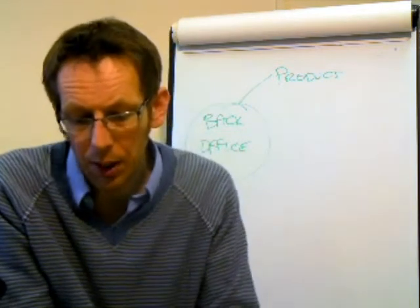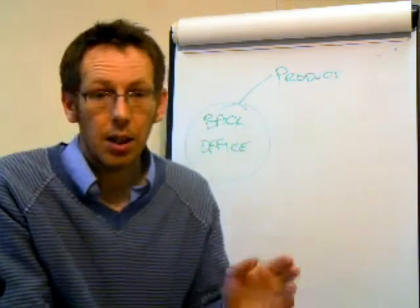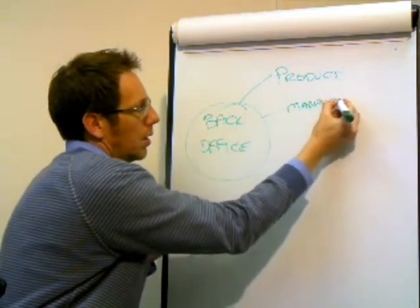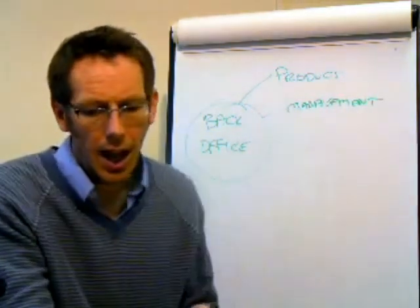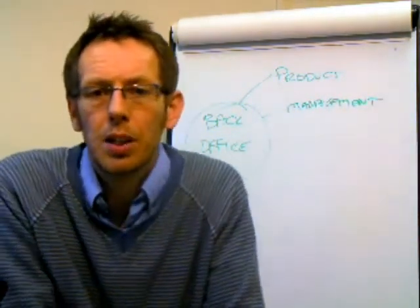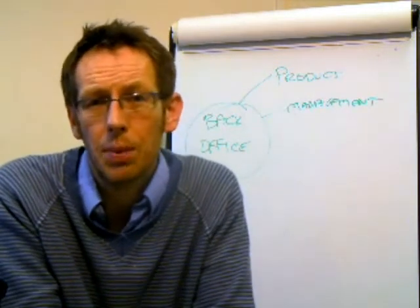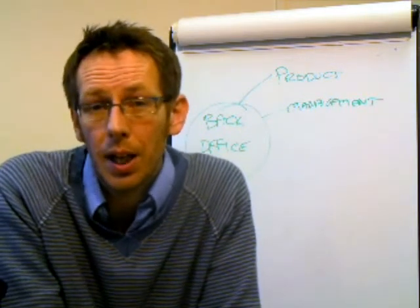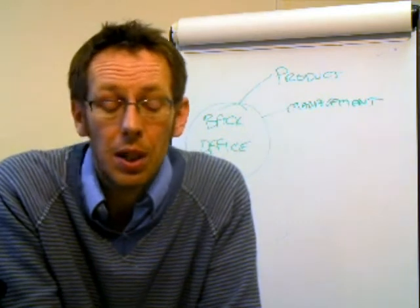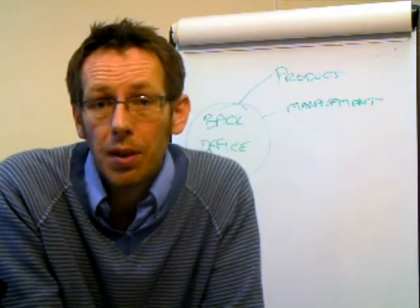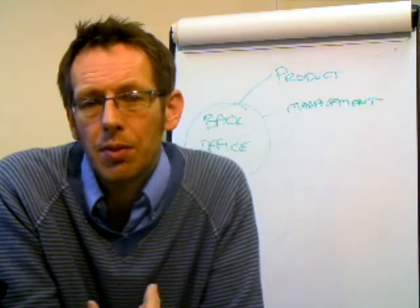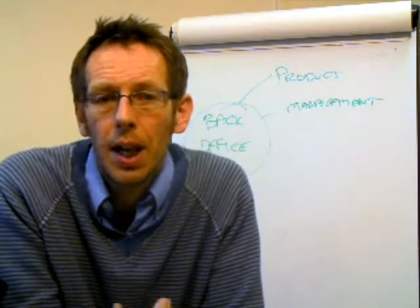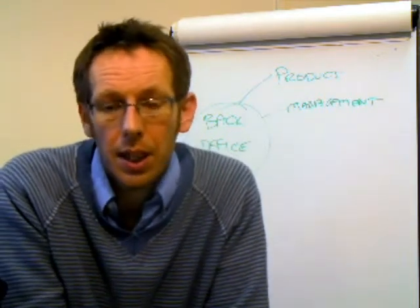The second element we're going to look at is managing the different elements of the business. Let's start off with customers. This is where your customer details will sit — there'll be a database containing the customer's name, their address, whether they've got an account with you, and what their email address is. From there you can extract their email address for marketing, their postal addresses for mailing, and of course telephone numbers as well.